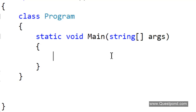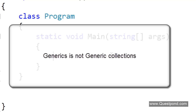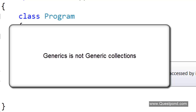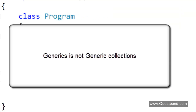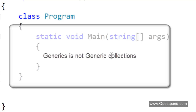Let me explain what generics is. A lot of people think that generics is actually generic collections. A lot of people think that List of String is generics — but it is not. Generic and generic collections are actually two different things. Generic is a concept, and generic collection is one of the implementations of that concept.